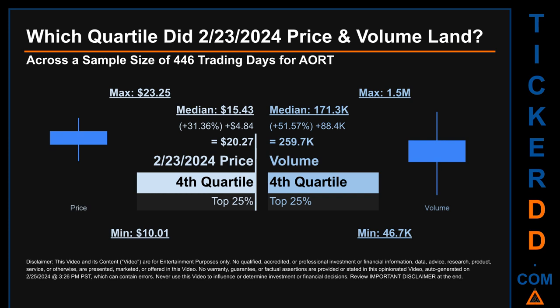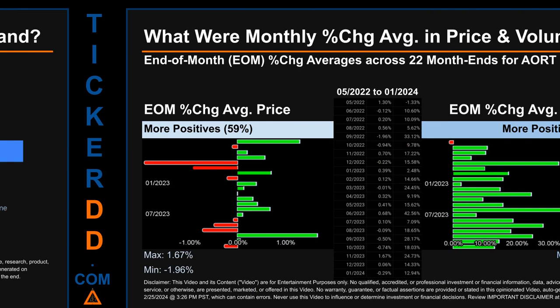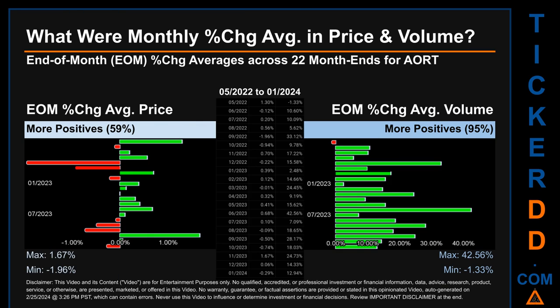Hello, my name is John. What were end-of-month percentage change averages in price and volume for AORT? The monthly average of percentage change in price and volume were calculated for each of the 22 month ends, by averaging daily percentage changes for each given month. From May 2022 to January 2024, 13 out of 22 month ends had a positive percentage change in average price — that is, 59% of month ends saw a positive percentage change in average price.